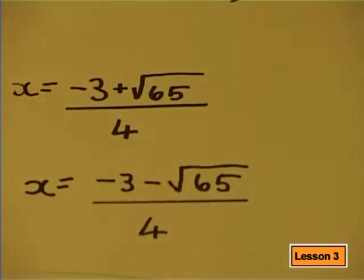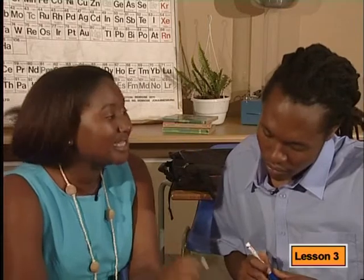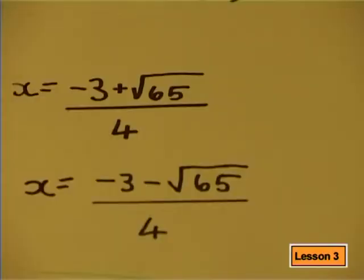Is that right? Yes, that's correct. You could leave your answer in surd form like this, or you could use your calculator to find the answer as a decimal. What you do here will depend on what form you were asked to give the answer in the original question. For this example, I'd like you to find the value of x to two decimal places.